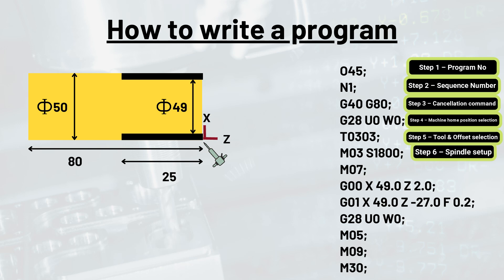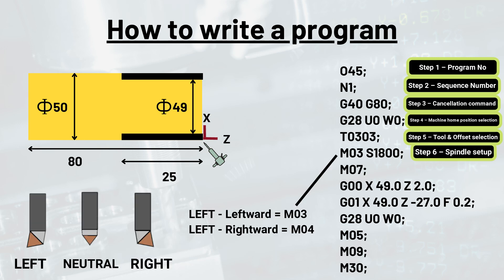The next step, or the sixth step, is setting up the spindle. If the hand of tool is left and propagation of tool towards workpiece is also leftward, then M03 command will prevail. Whereas if the propagation of left hand tool is towards right, M04 command will prevail. Same thing goes for right hand tool as well.